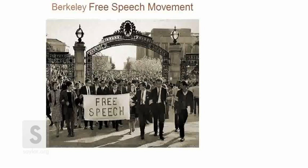Universities were becoming more professional-oriented and moving away from being simply centers of higher education and liberal arts. Many universities, especially in California, were experimenting with mass education — putting 1,000 students in a classroom or using video monitors to show the professor lecturing in one room. Students were beginning to get upset with this. They didn't like the fact that universities were working on bombs and weapons development, or that they were paying to go to college and sitting in classrooms with 1,000 students without any real interaction with their professors.